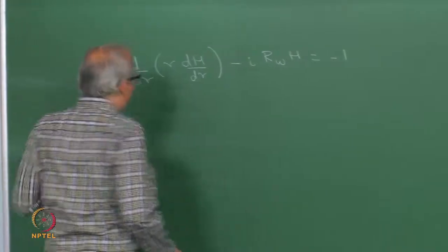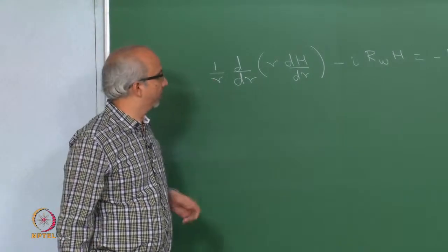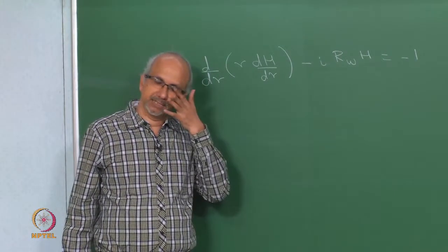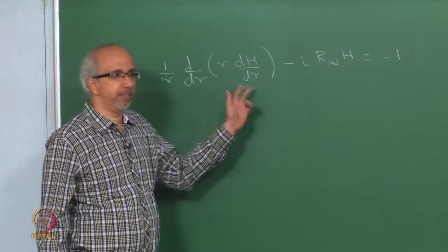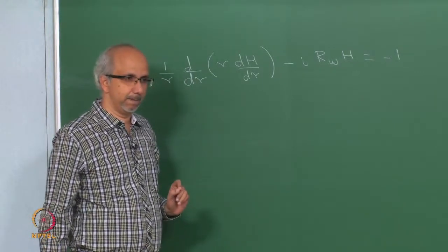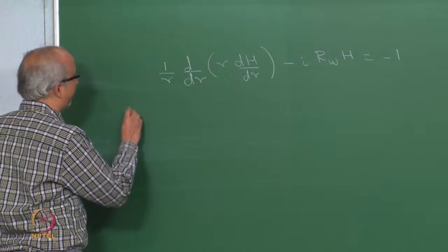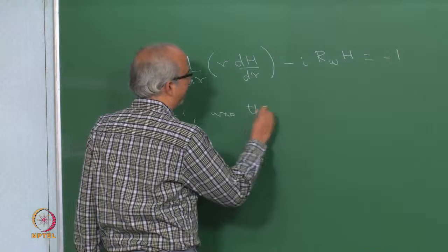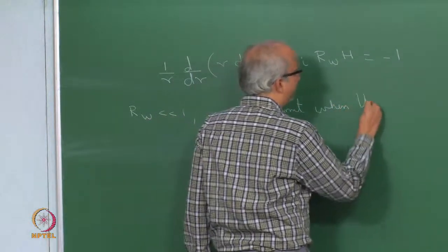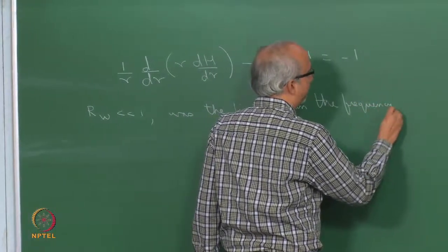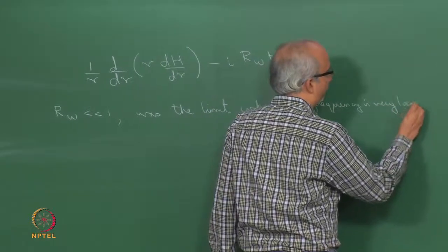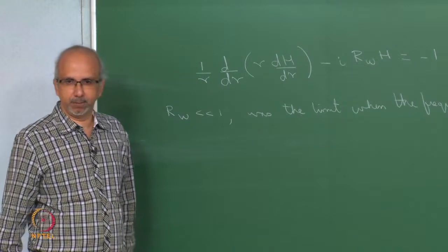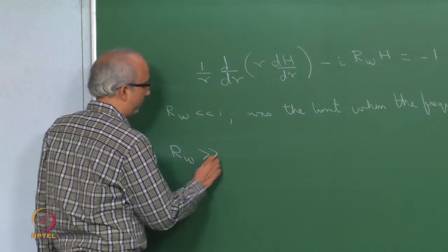Welcome to lecture 16 of multiphase flows. We were looking at a particular equation last class, which arises in the context of pulsatile flow in a circular channel. We concentrated on the limit of Rω much less than 1, which is the limit when the frequency is very low. Now I want to talk about the other limit of Rω being much greater than 1.